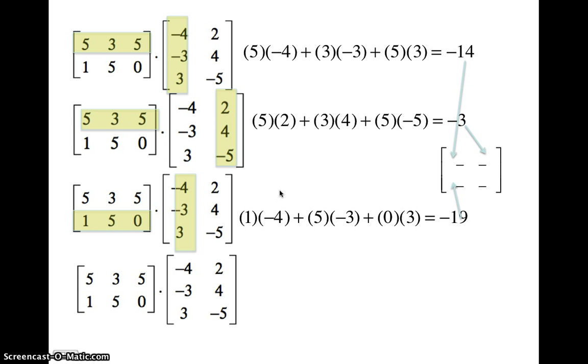Finally, we do row two, column two, as it's highlighted. One times two, plus five times four, plus zero times negative five is 22. And that will go in the bottom right corner, row two, column two. So reading from left to right, top to bottom, your product should look like negative 14, negative three, negative 19, and positive 22.